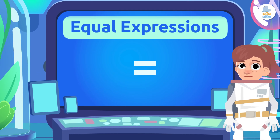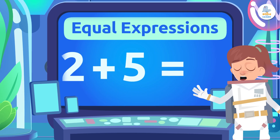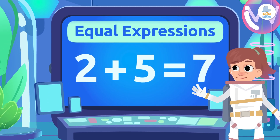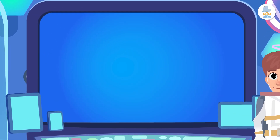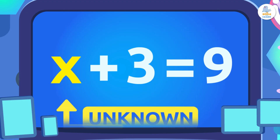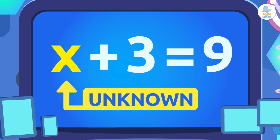For example, 2 plus 5 equals 7. In an equation, we have constants and variables. Constants are numbers with a fixed value — they don't change. Variables are the unknowns, which are usually represented by letters. The most common one is x.